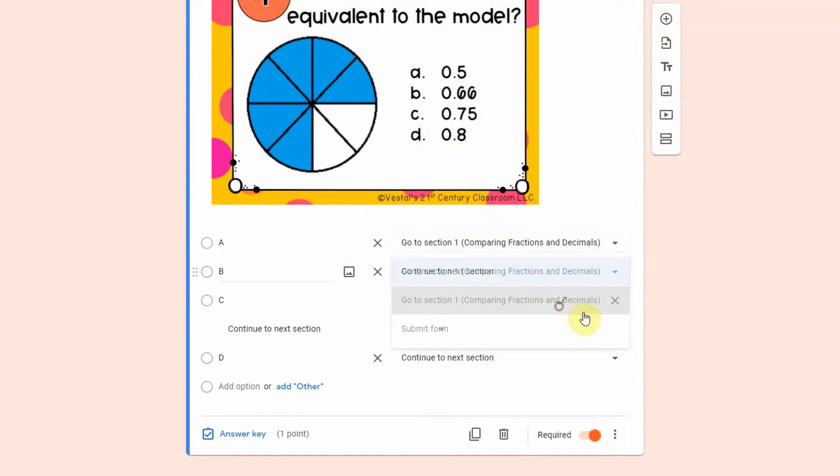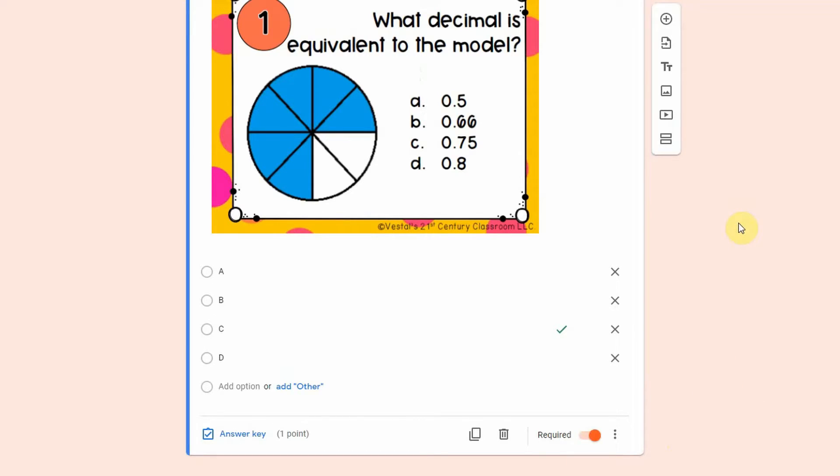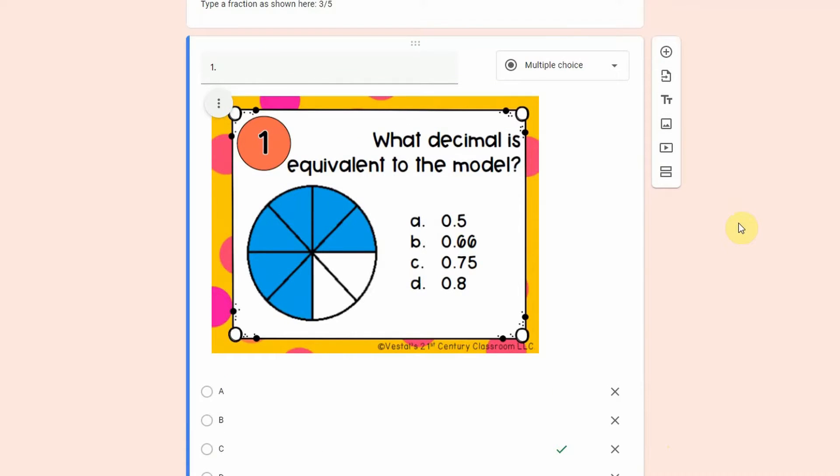So then after I click on that I can decide so if they click on A they go to section one, so basically they'd have to repeat the same section again and then they could only go to the next section if they clicked the correct answer. I typically don't do that with my task cards so I'm going to turn that off.